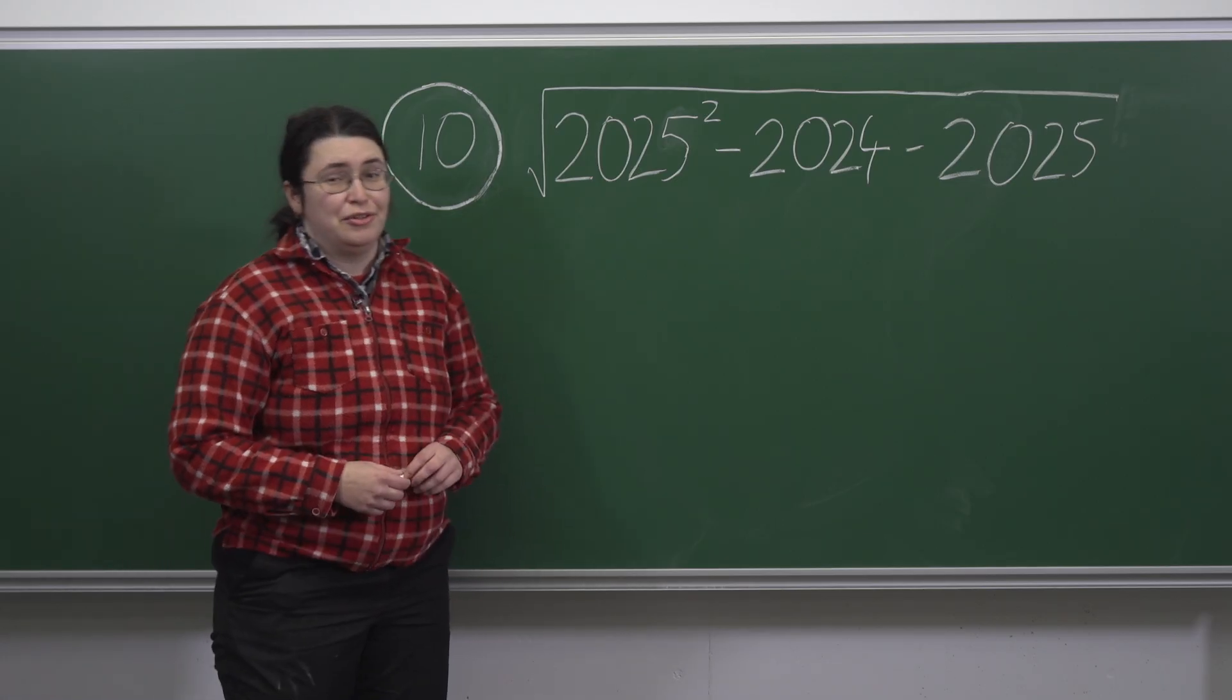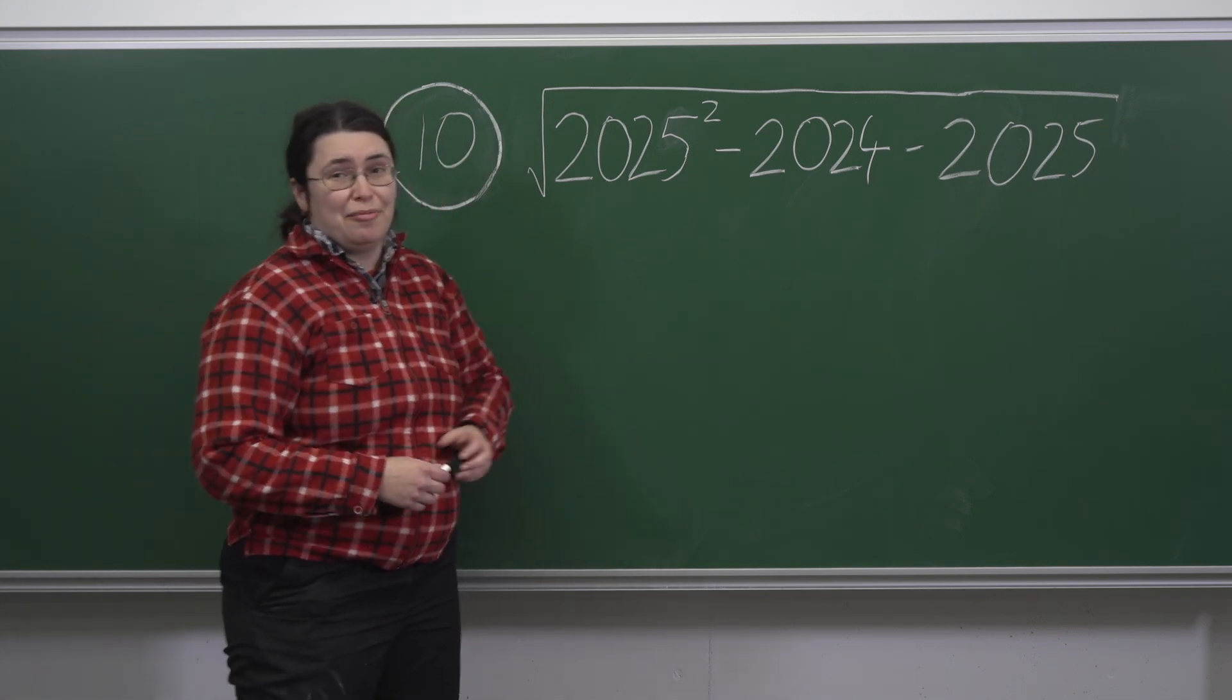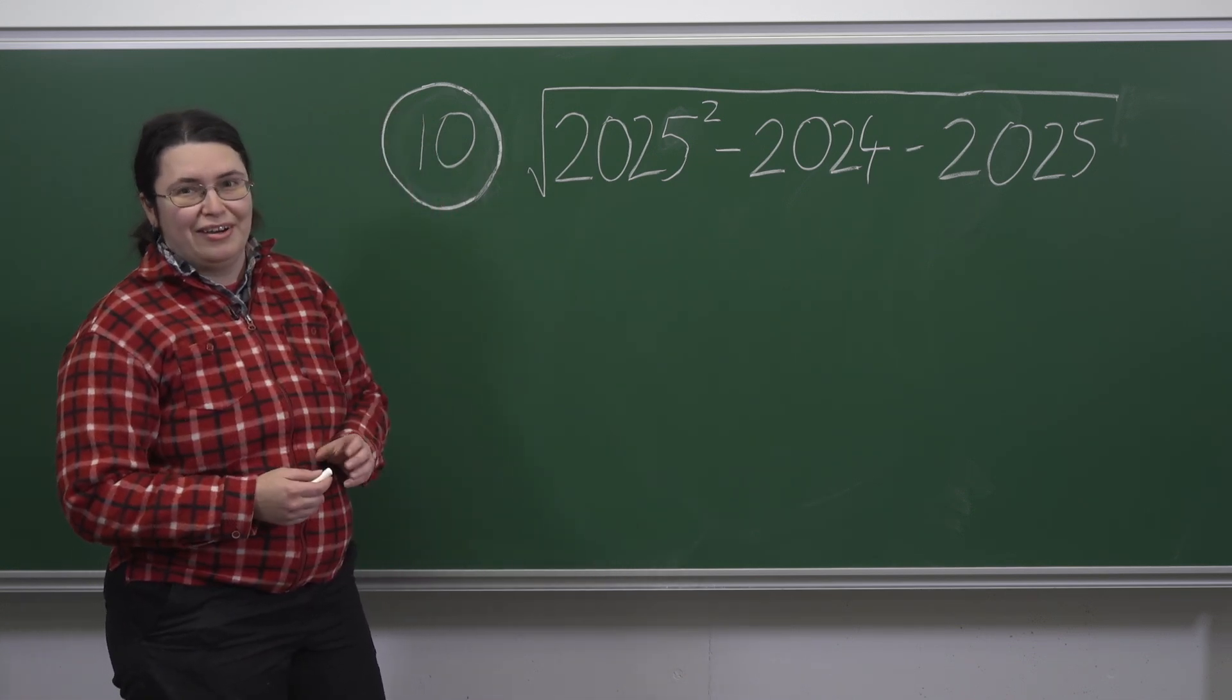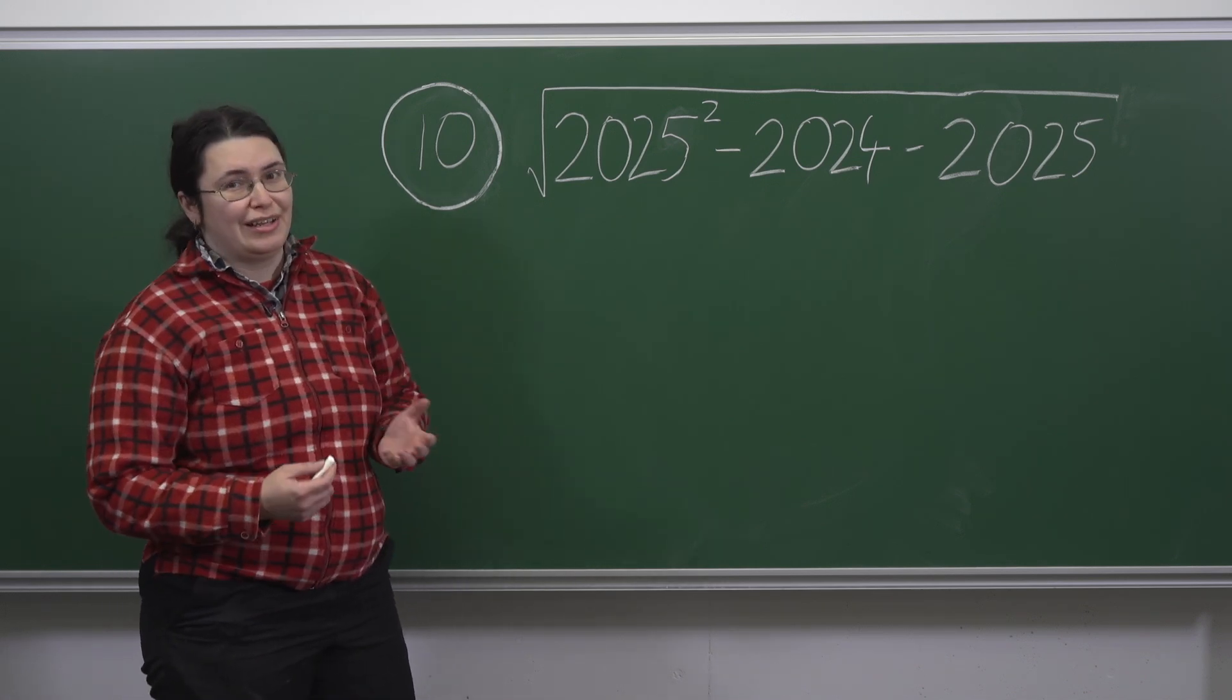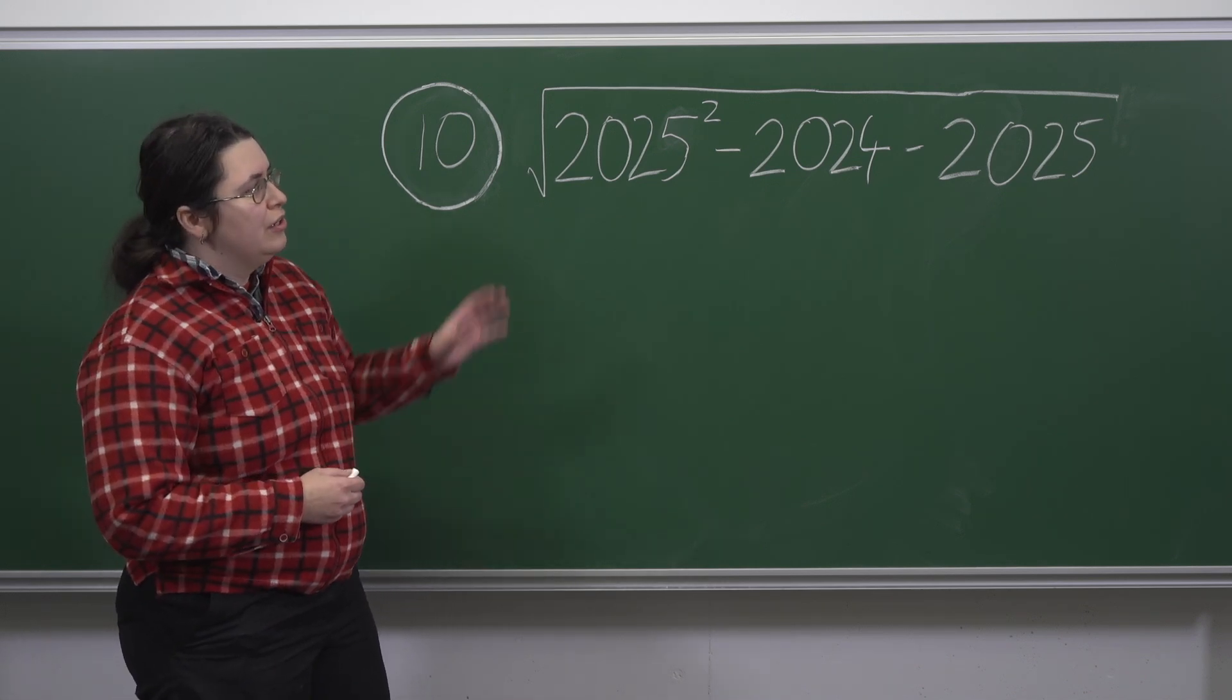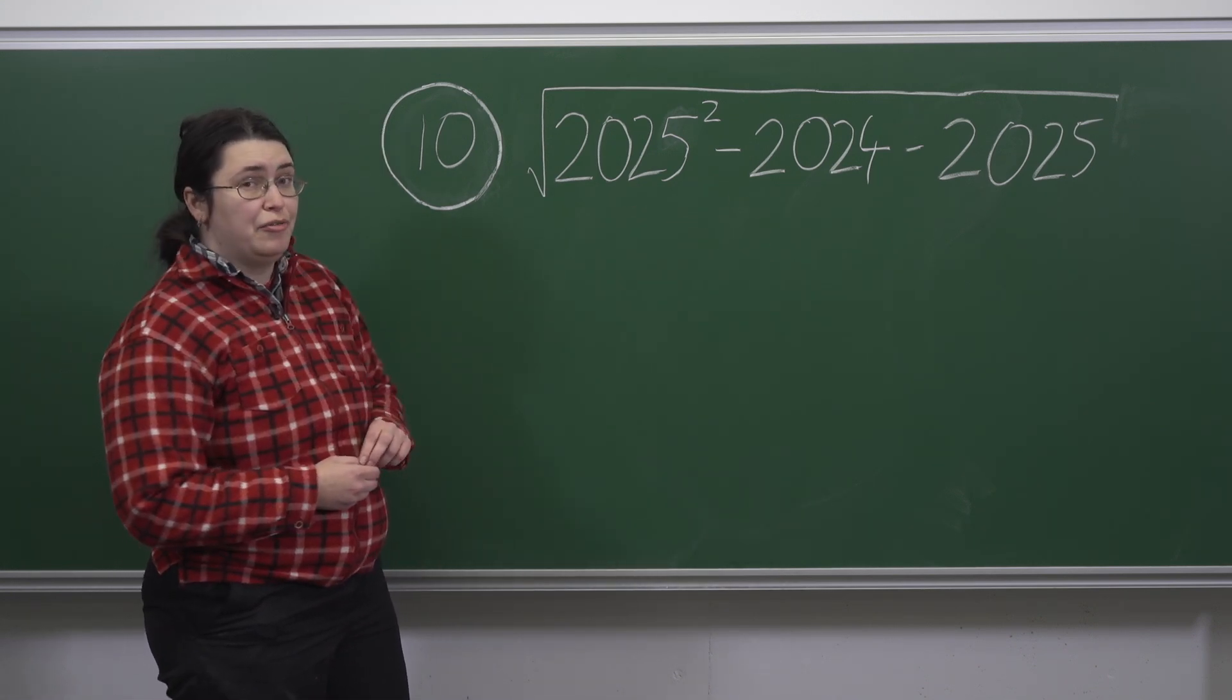If we were to get stuck on this question, we could of course go through and evaluate this properly and work out the answer. However, knowing this is a mass challenge problem, there's likely to be a neater solution. So we're probably looking to factorise the expression that's in the square root.